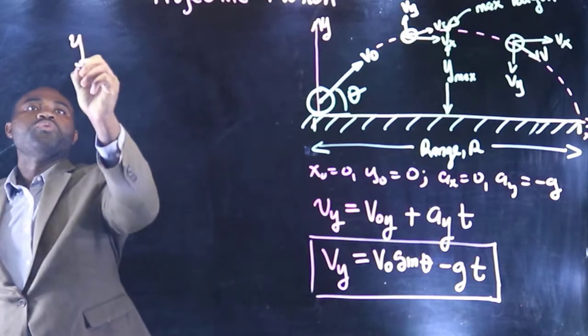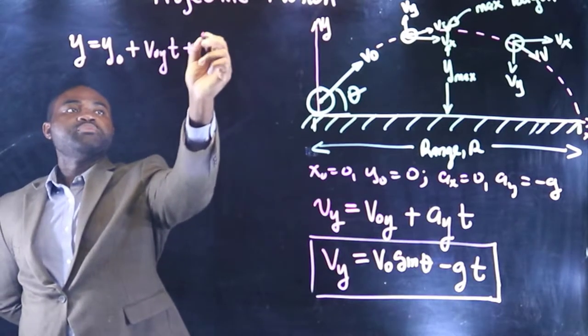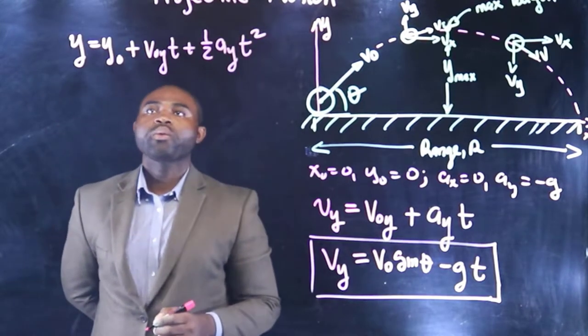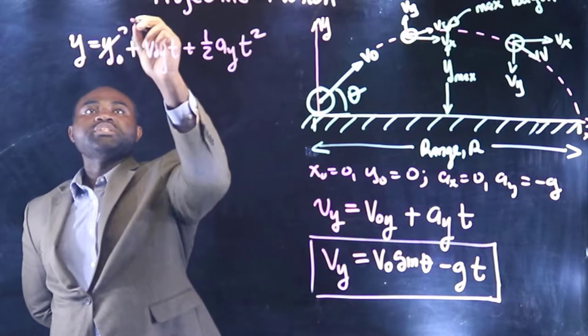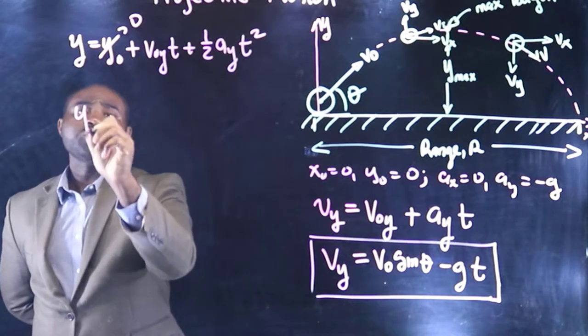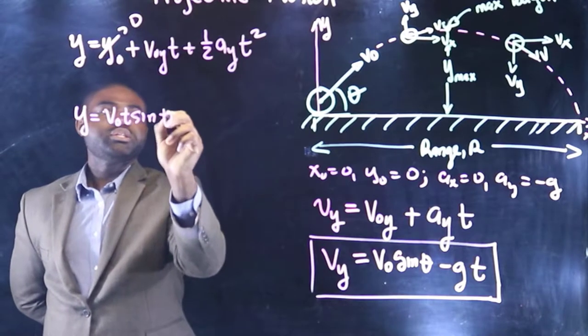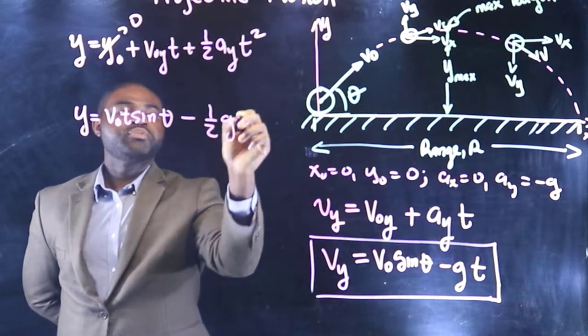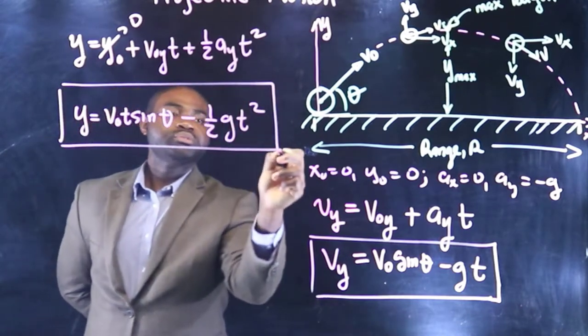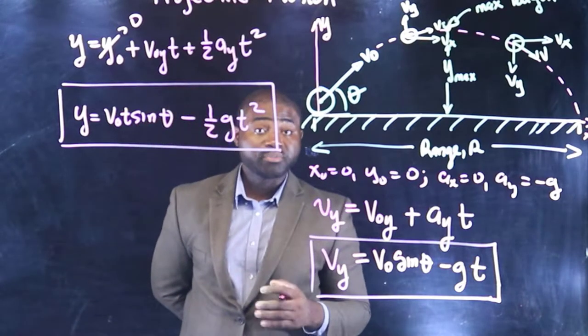Similarly, y is equal to y naught plus voy t plus one-half ay t squared. We know that this is 0 because the object starts moving from the origin. So y will be equal to vo t sin theta minus one-half g t squared. So this gives us the equation that shows us how the position of the object changes with time in the y direction.